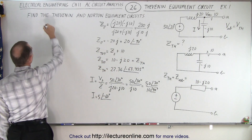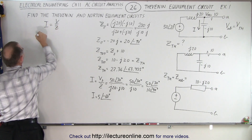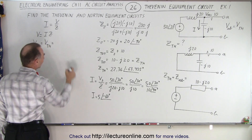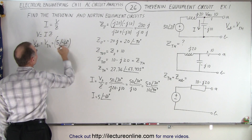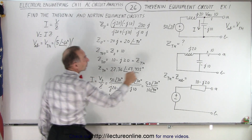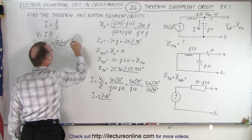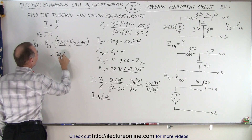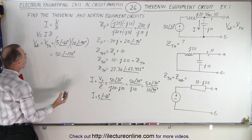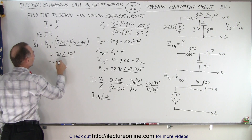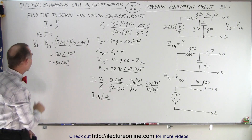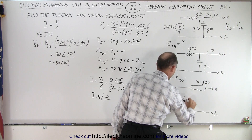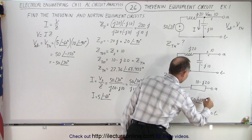Now we find the voltage using V = I × Z. V_Thevenin = V from A to B = the current 5∠-60° multiplied by the capacitor impedance 10∠-90°, which equals 50∠-150°. Alternatively, this can be written as -50∠30°. So V_Thevenin = 50∠-150°.